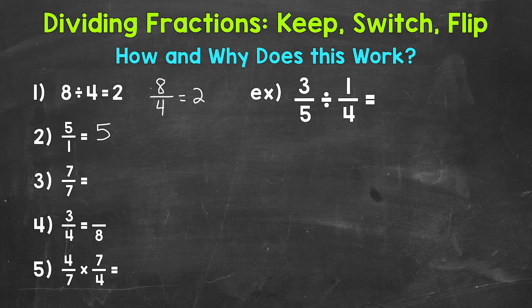On to number 3: fractions that have the same numerator and denominator. For example, 7 over 7 — 7 sevenths. Anytime the numerator and denominator are the same, that fraction represents one whole. So 7 over 7 equals 1. Same numerator, same denominator, equals 1.